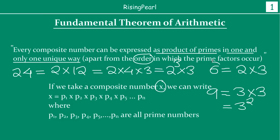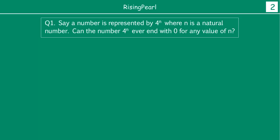So friends, this is something we have seen at length in the last webisode — that every single composite number can be expressed as a product of prime numbers. Now let's find out how we apply this knowledge to solve some problems. The question is: a number is represented by 4 to the power n, where n is a natural number. Can 4^n ever end with 0 for any value of n?